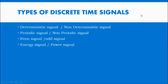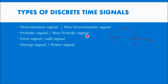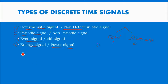We will move to the next part: types of discrete time signals. Broadly, there are two types — continuous and discrete. We are dealing with discrete signals in this subject. Both continuous and discrete signals are divided into four types: first, deterministic and non-deterministic; second, periodic and non-periodic; third, even and odd; and fourth, energy and power signals.